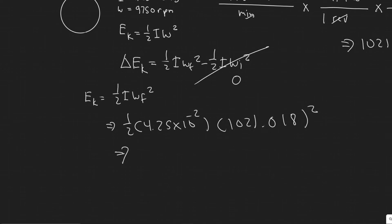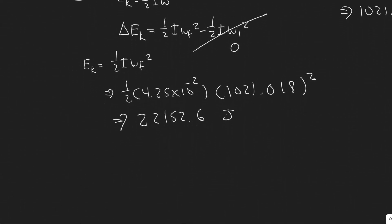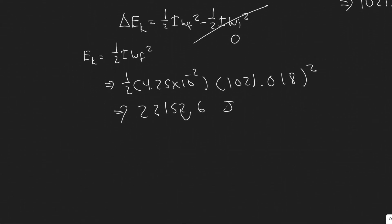When you do this, you should end up with 22,152.6 joules. Since we're talking about energy, it's in joules. Rounding this to a better value with four significant figures, you can say 2.2 × 10⁴ joules.